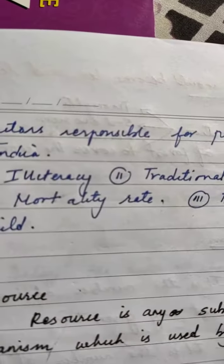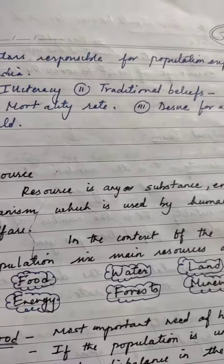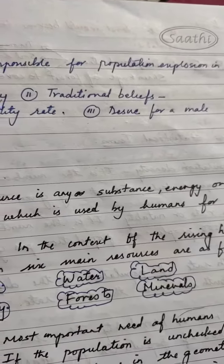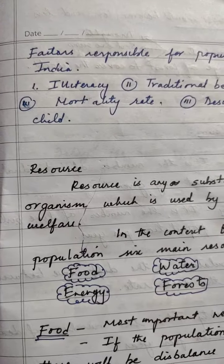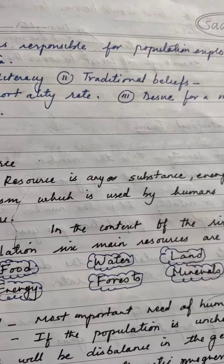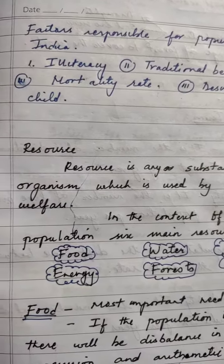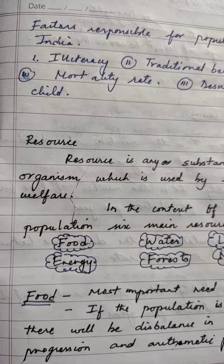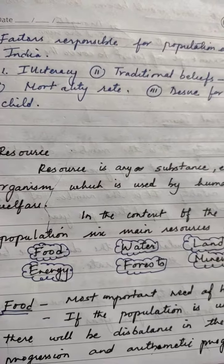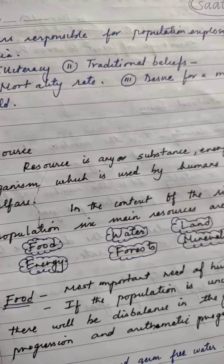The factors responsible for population expansion in India include illiteracy, traditional beliefs, high mortality rate, and desire for a male child. These are the basic factors for population explosion in India.